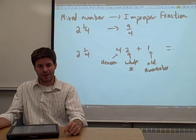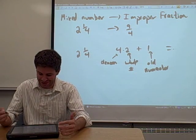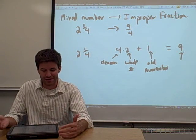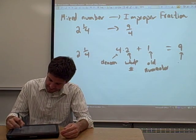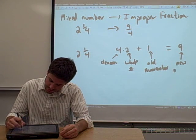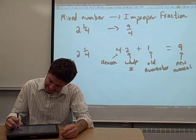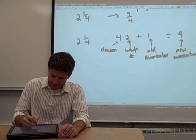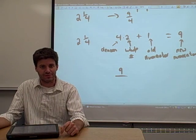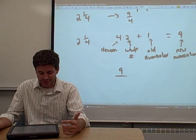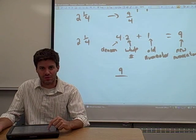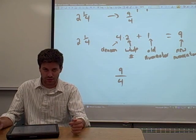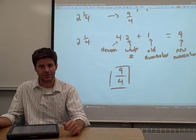When you do that math, you multiply 4 times 2 and add 1, and you get 9. That 9 is going to be your new numerator in your improper fraction. You put that new numerator on top, and in the bottom you keep your old denominator. In this case, your old denominator was a 4, so the answer is 9 fourths, just like I told you.